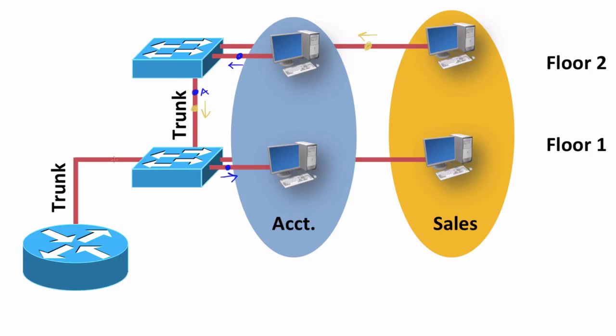It's going to send that frame down this trunk link to the router. The router is going to receive the frame in on one sub-interface - we're going to call it - and that sub-interface is just a logical division of a physical interface on our router.